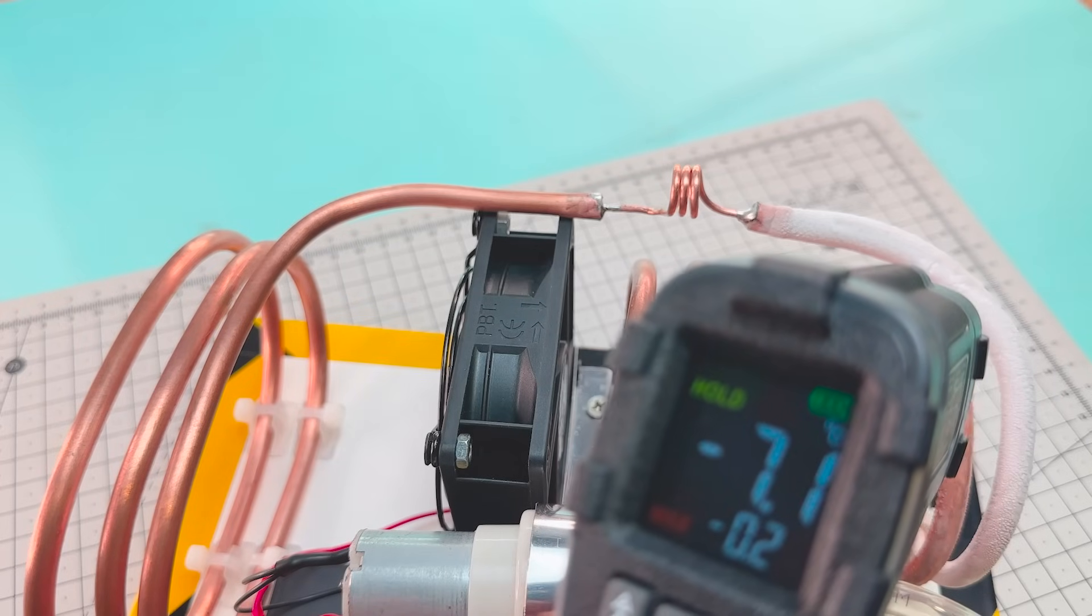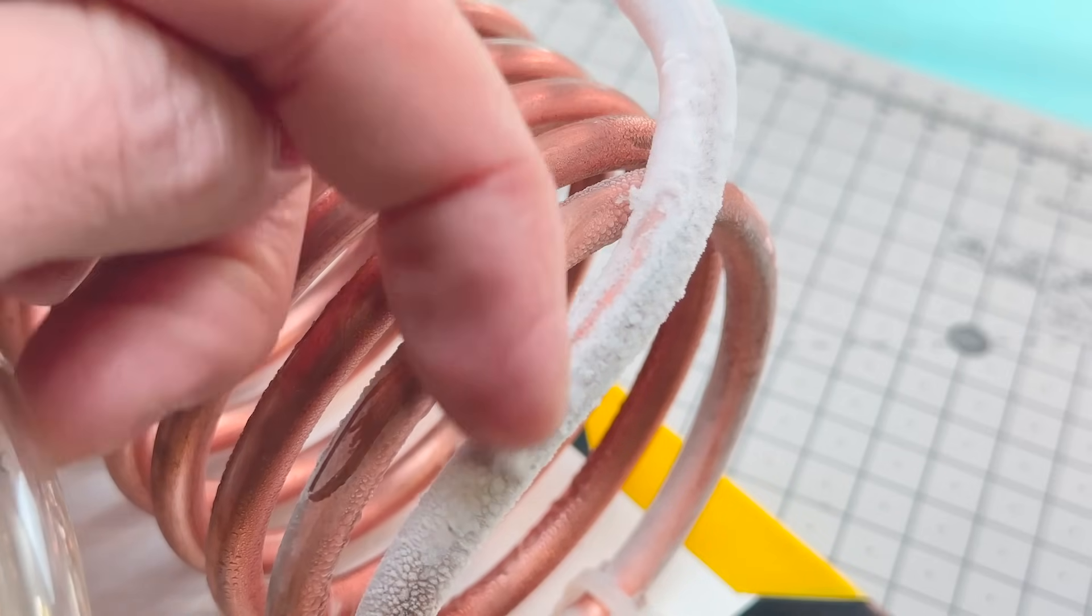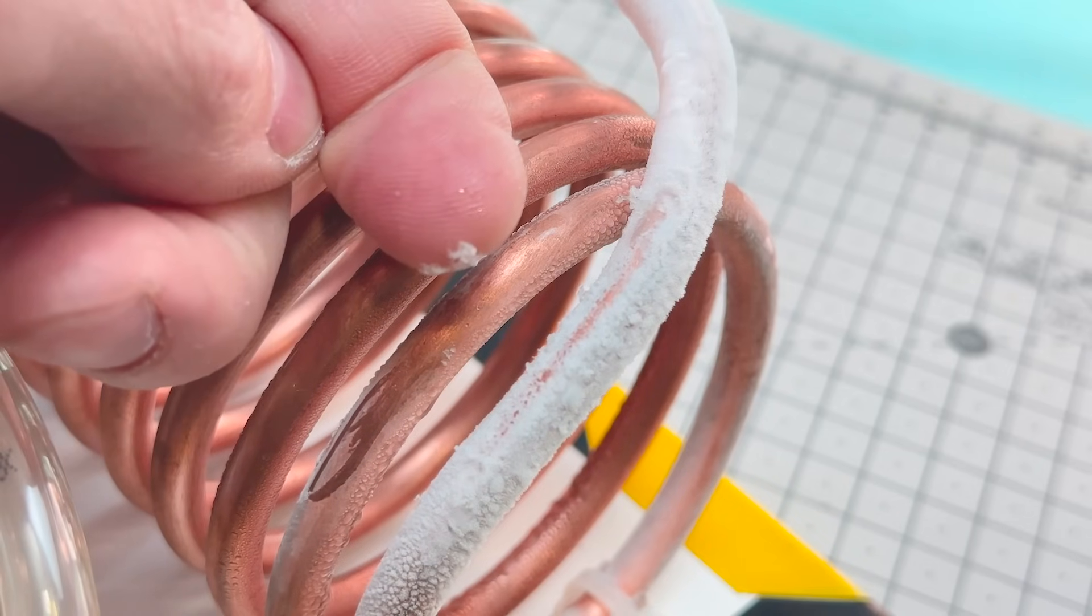In the first measurements, we get temperatures of minus 7 degrees Celsius. But if we give it some time, we'll see the tubing get colder and colder.